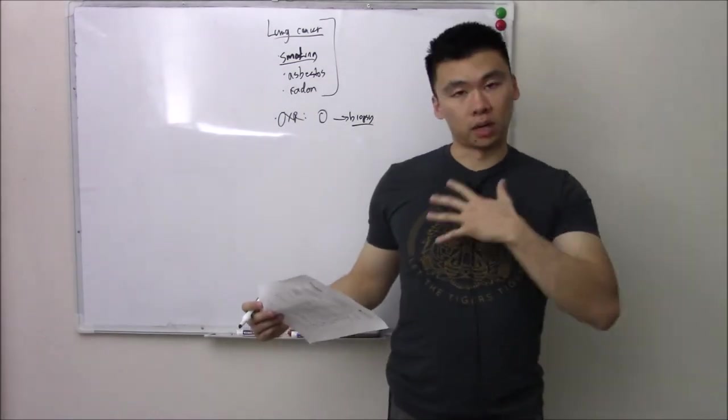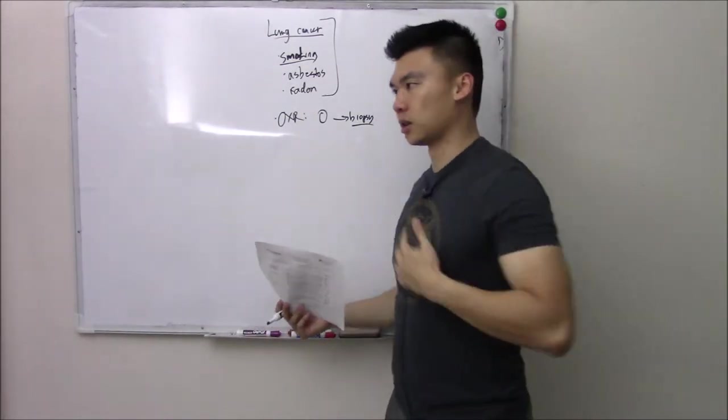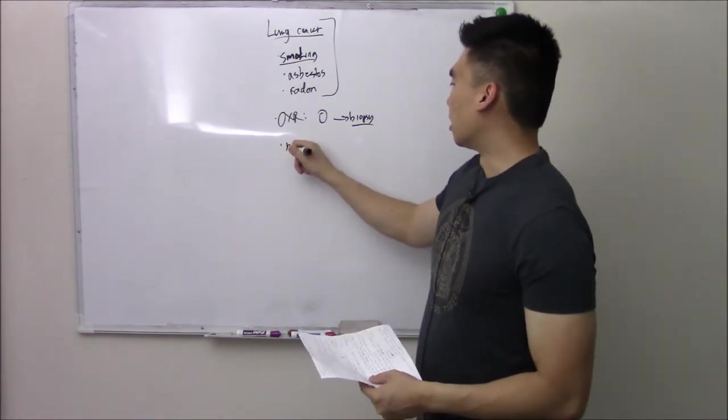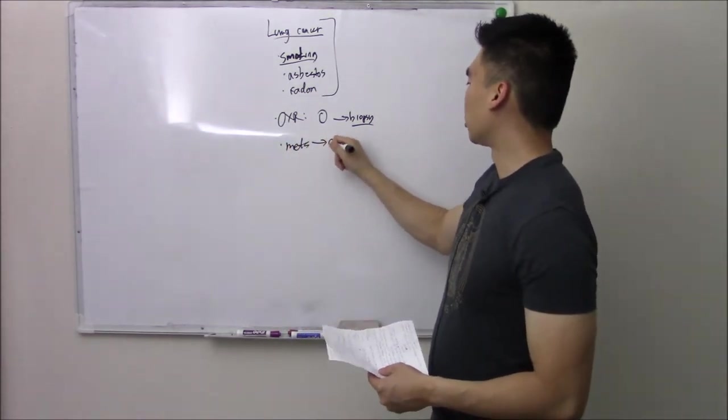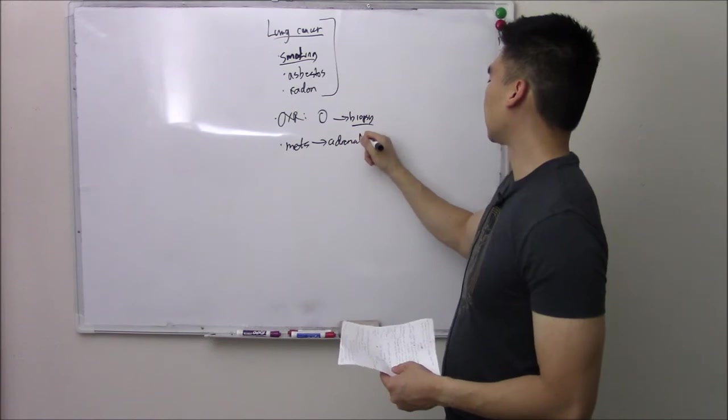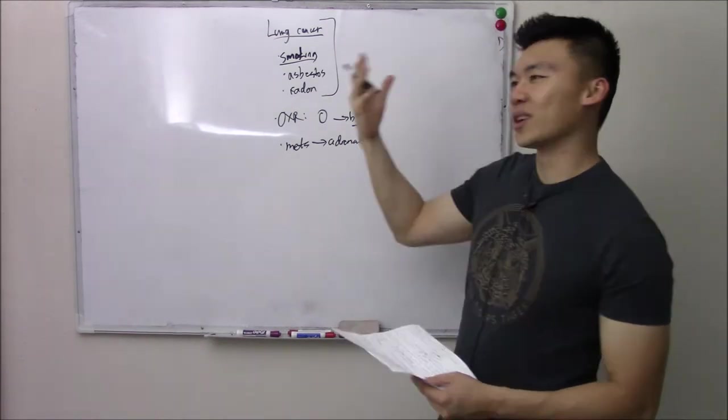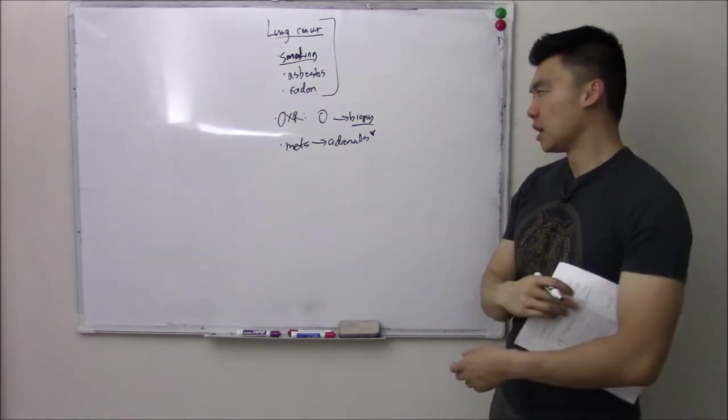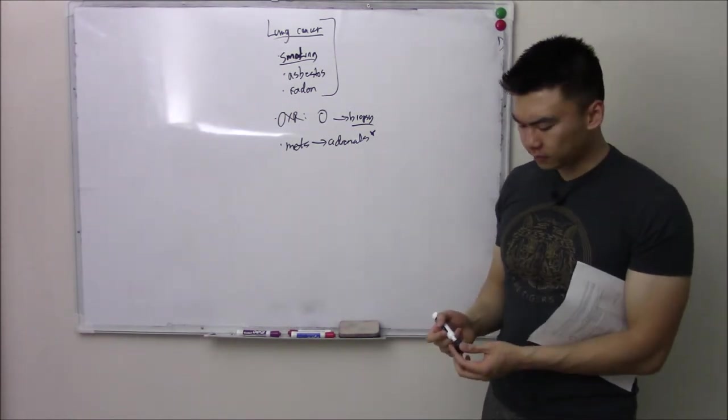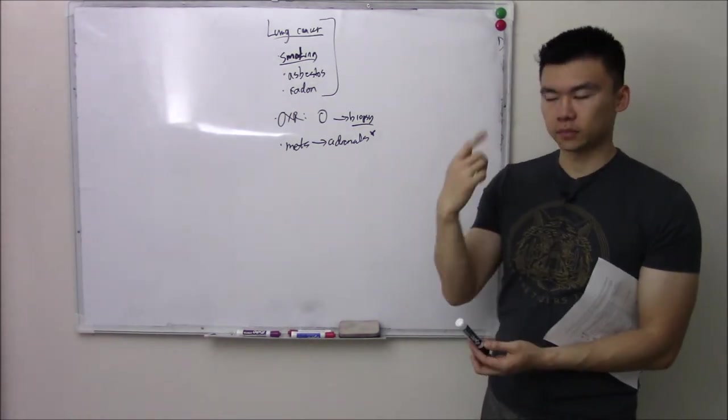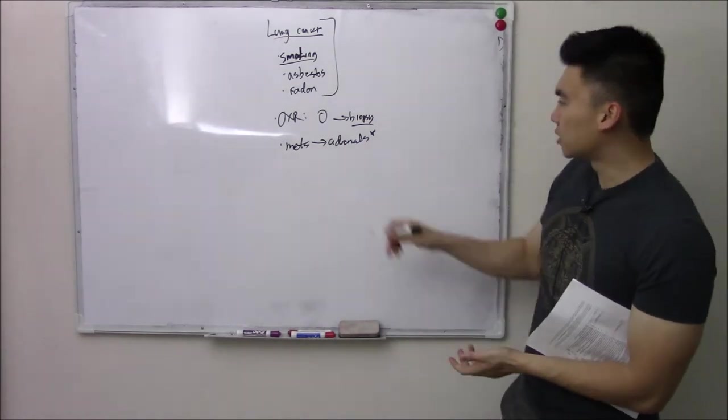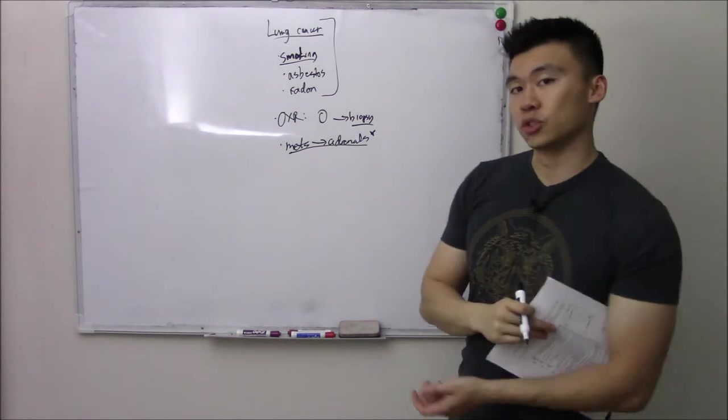Check the lymph nodes. Lung cancer really likes to spread to the breast because it's close. Your bone, especially your spine because it's close. One thing that you should know is that it likes to spread to your adrenals. That's odd one out. Not a lot of people think about that. No one really knows the mechanism. The lymphatics are linked, your lungs and your adrenals. But just know that it likes to spread to your adrenals.